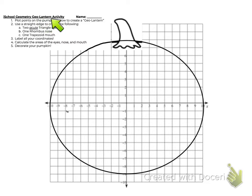First off, we're going to plot some points on the pumpkin below to create a GeoLantern. We need two acute triangular eyes, one rhombus for a nose, and one trapezoid for a mouth. Then lastly, we're going to label our coordinates, calculate the area, and decorate our pumpkin. Oh, and also we have to describe our shapes too. So let's go through each of these steps.